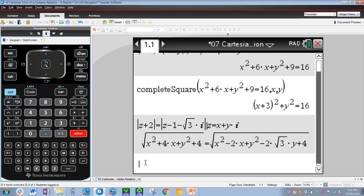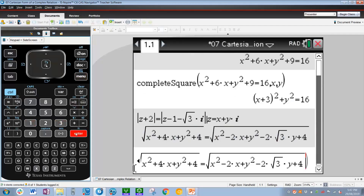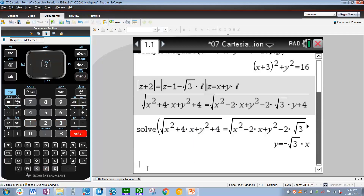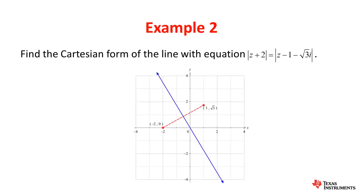Now we get something looking quite similar. You can start working on this equation and doing backtracking with it. However, we can simply go straight into the solve command — menu 3, 1, solve. Press up, enter to copy and paste it, and comma y. Let's solve for y. So the Cartesian equation is y equals negative root 3 x, which is a straight line going through the origin with gradient negative root 3. Furthermore, you can also see that the blue line is the perpendicular bisector of the line segment joining the point negative 2 comma 0 and 1 comma root 3, which are the coordinates generated from each of those complex numbers.